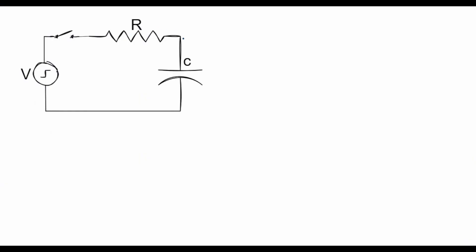In today's lecture we'll be finding the step response of an RC circuit. We have a step input that is applied at t equals 0 across this RC circuit, and we are assuming that the capacitor is at initial rest, that is, it doesn't hold any charge: VC(0⁻) is equal to 0.